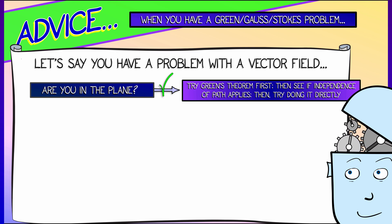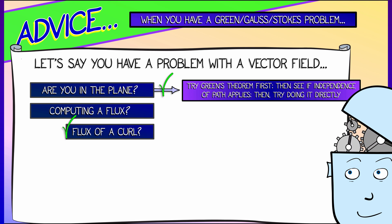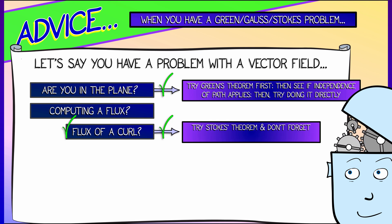That's the only thing you have to worry about. Now, if you're not in 2D, if you're in 3D, then you need to examine the problem carefully. Are you being asked to compute a flux? Do you see the phrase flux of a curl? If you see flux of a curl anywhere in a problem, boom, Stokes theorem. Try Stokes theorem. Don't forget about the fact that you can simplify the surface. That's a really nice step.